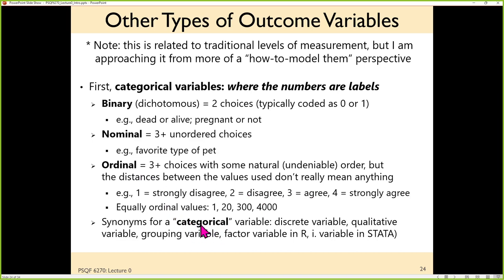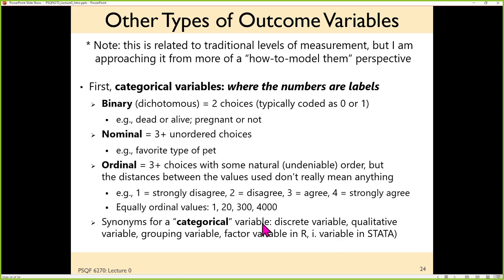I'm going to stick with the phrase categorical to describe choices where we're talking about kinds and not amounts — but know they have many synonyms: discrete variable, qualitative variable, grouping variable. In R they're called factor variables, in SAS class variables, in SPSS fixed factors, in Stata the code has them as i-dots. There are a lot of synonyms, but it basically boils down to: is this number really a number or is it a kind?